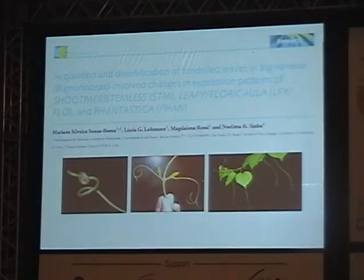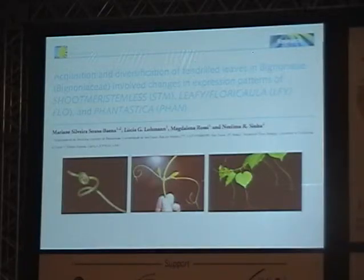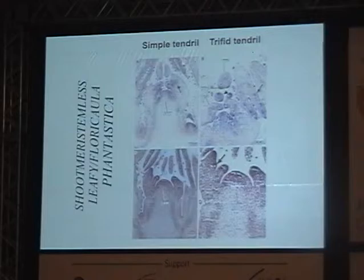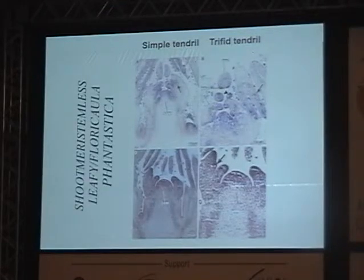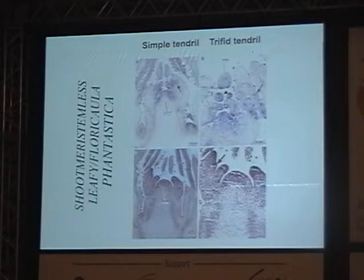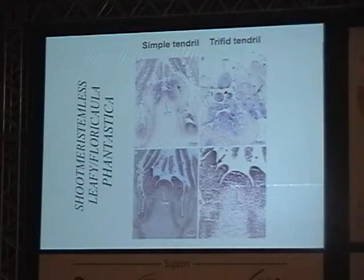We also looked at the genetic basis of tendril changes, examining genes associated with leaf partitioning — specifically leafy/floricaula, shoot meristemless, and fantastica — to see patterns of expression. Shoot meristemless was expressed in the meristem exactly where new tendril branches would develop. The overall pattern of expression of these three genes was associated with tendril ramification and was more strongly expressed in tendrils with the highest levels of ramification, showing that the same genes involved in leaf partitioning were also leading to tendril partitioning.